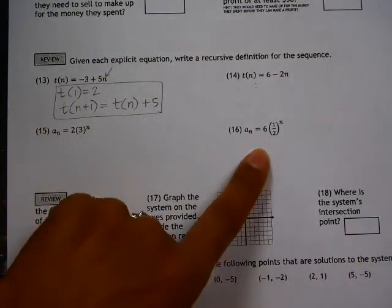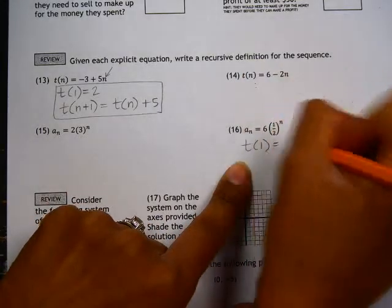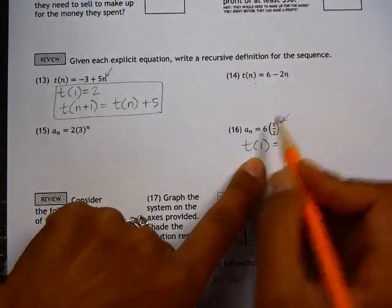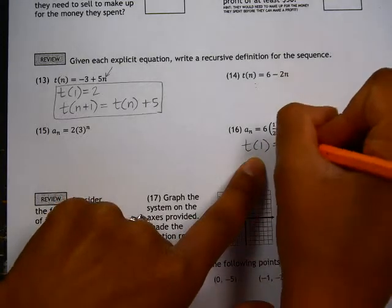Let's look at 16. We need to give the first term. So if we plugged in n equals 1, 6 times 1 half to the first power is 3.